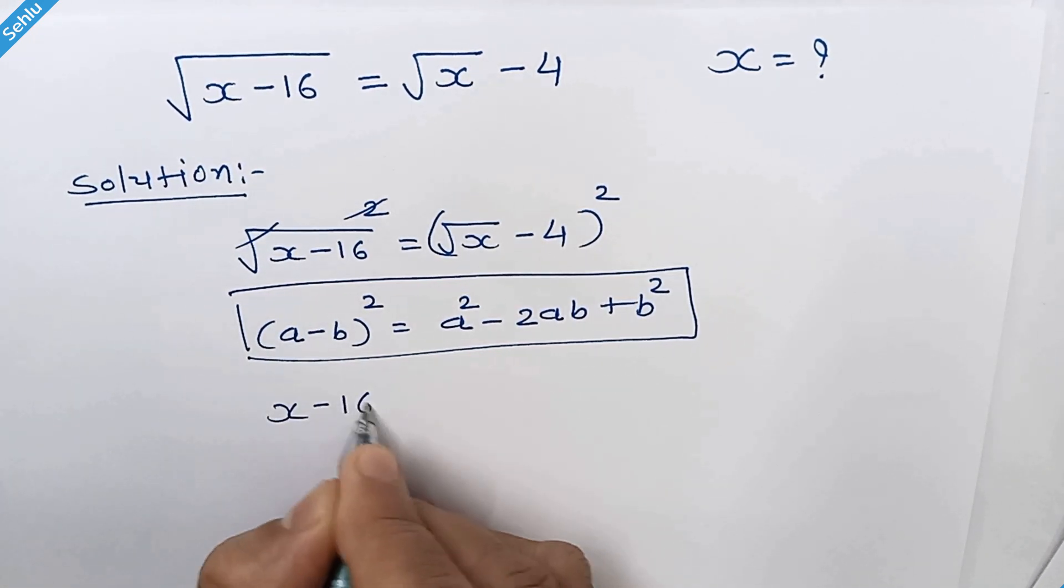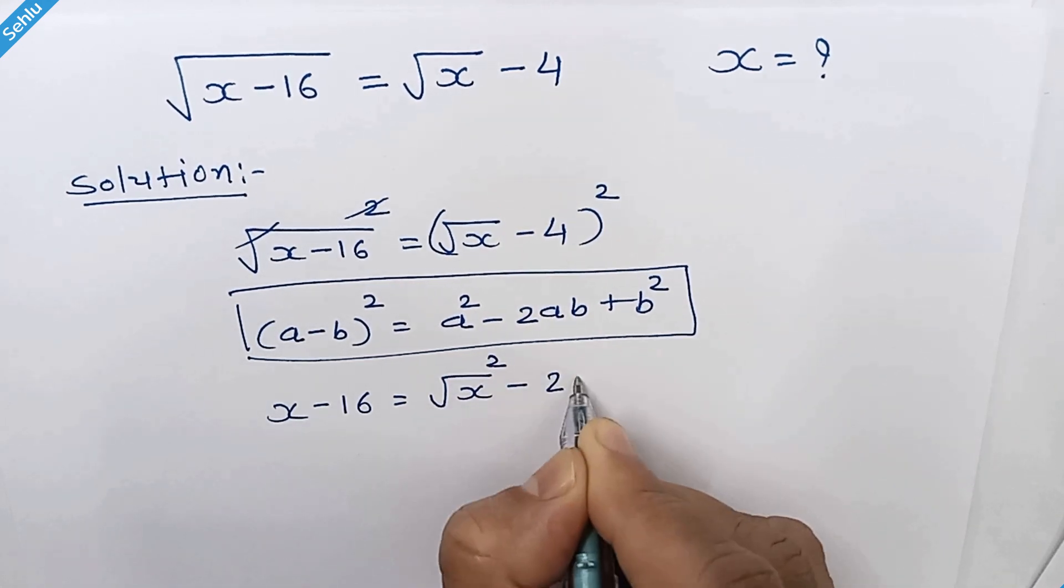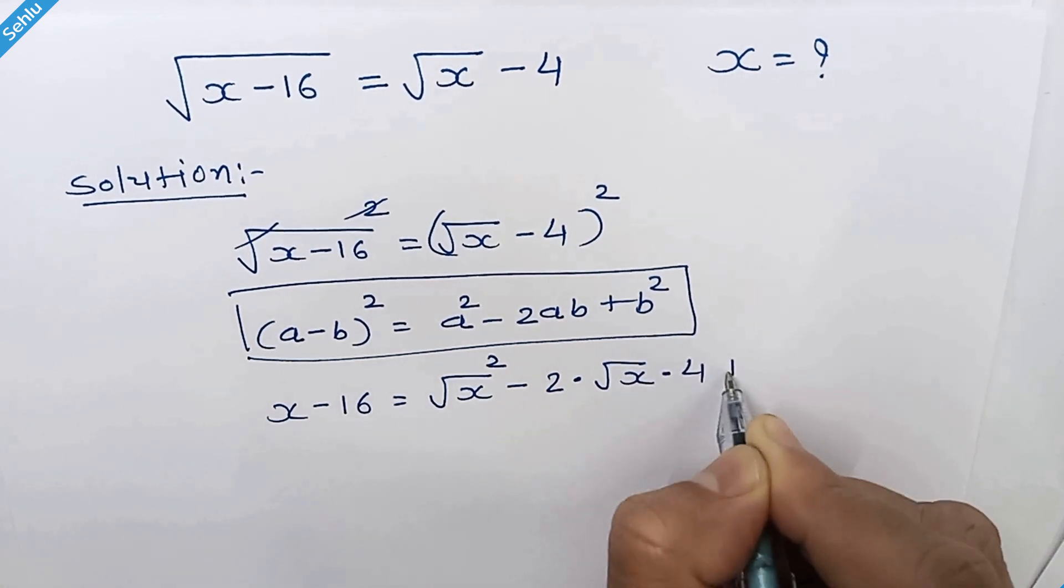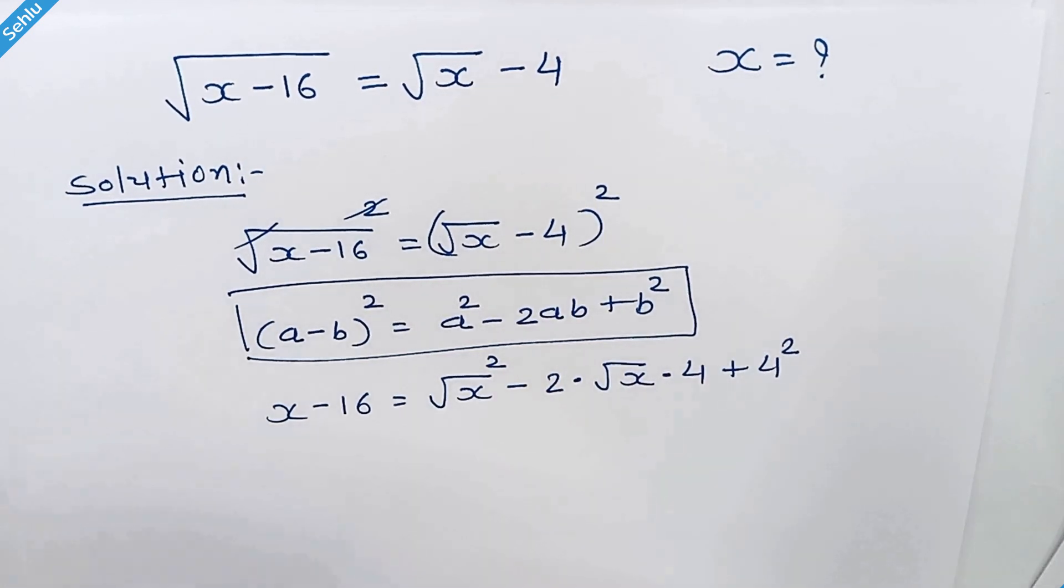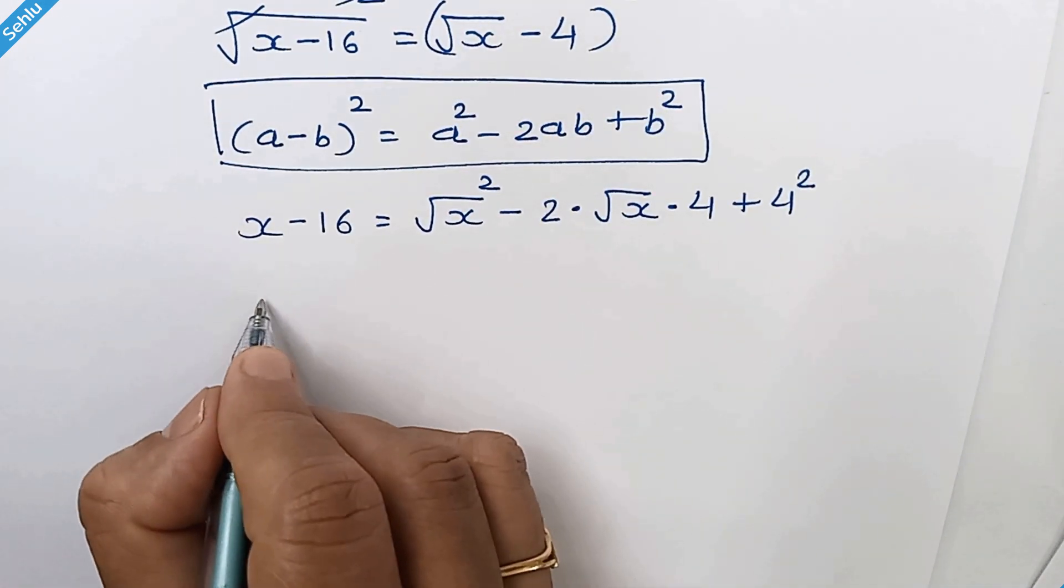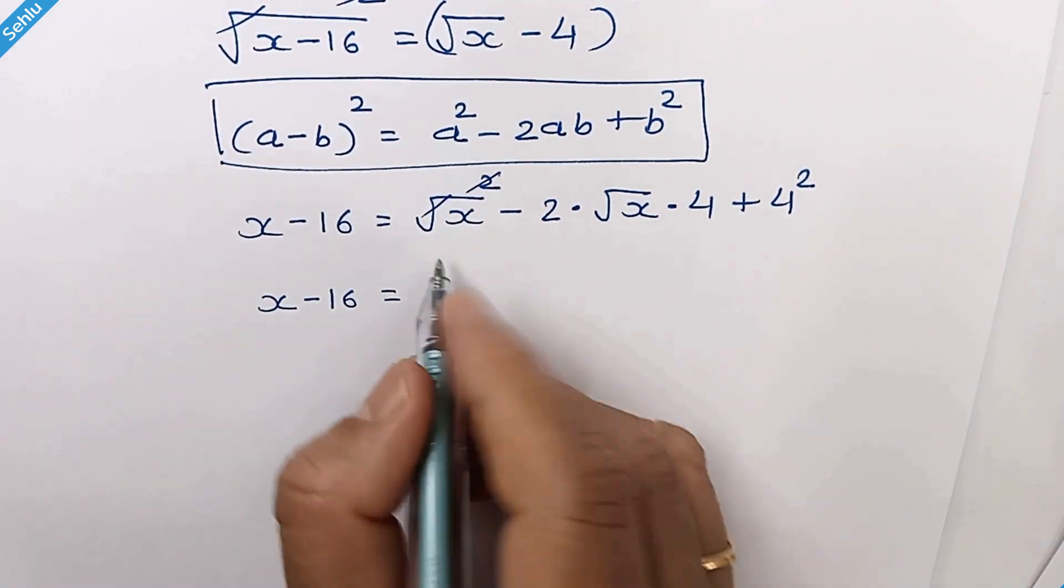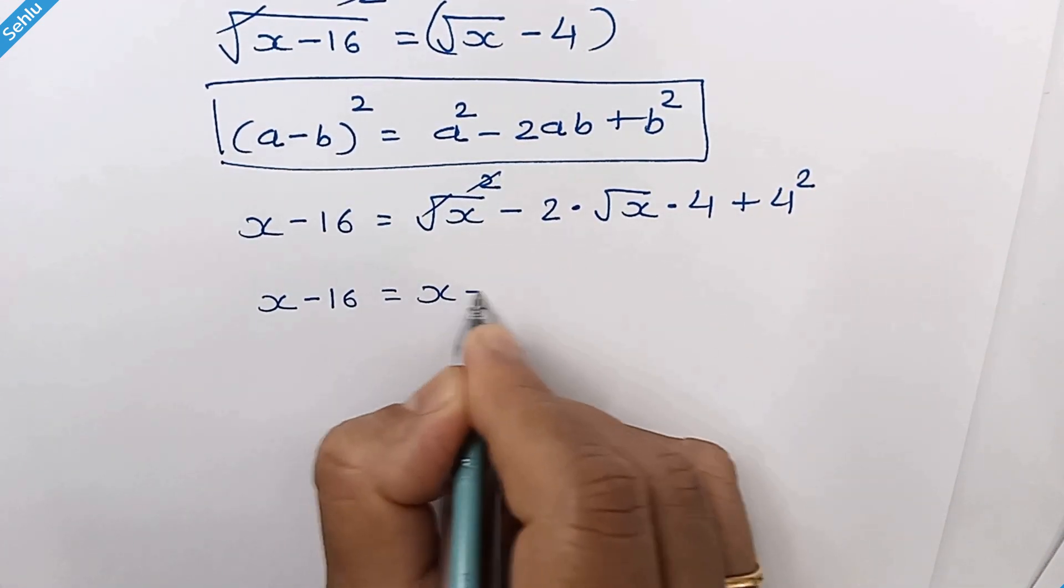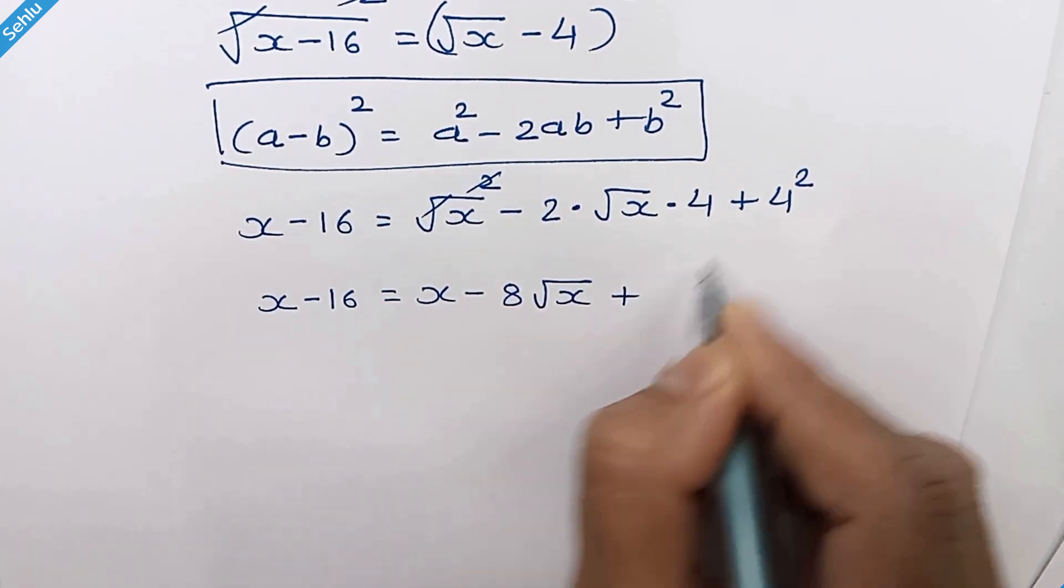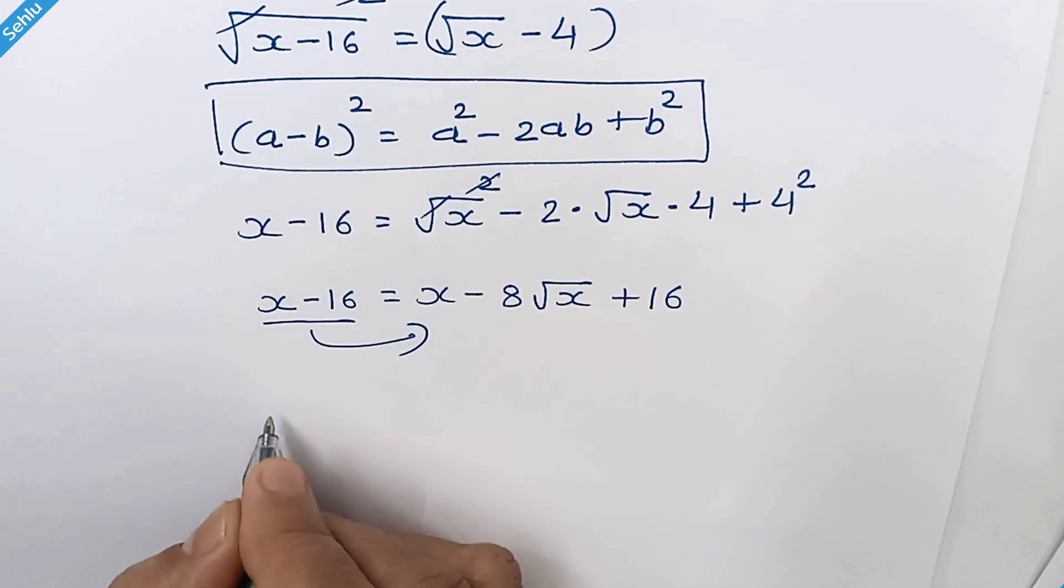x minus 16 is equal to square root x square minus 2 times square root x times 4 plus 4 square. So we have x minus 16 is equal to... these two get cancelled out... x minus 8 times square root x plus 4 square is 16. Move this part to the right hand side.